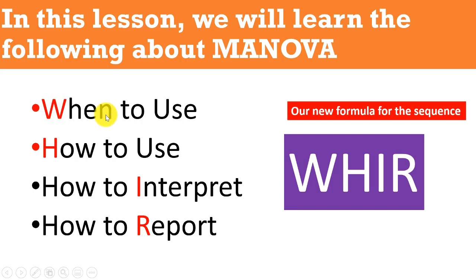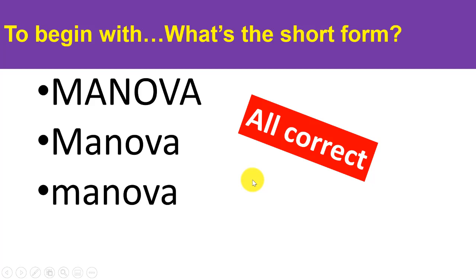Today we're looking at MANOVA — where to use it, how to use it, how to interpret it, and how to report it. What is the short form of Multivariate Analysis of Variance? It can be written with a capital letter at the beginning or lowercase all the way through — all forms are correct.